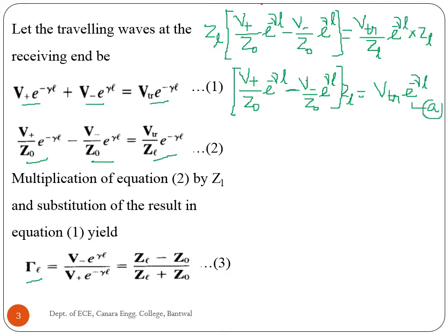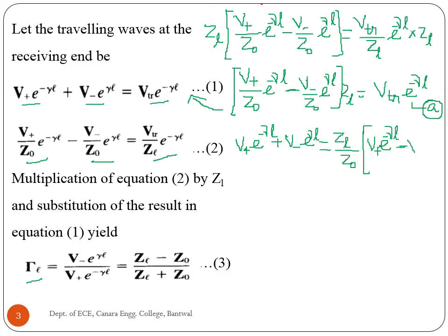This result is equation A. This equation should be substituted into equation 1. After substitution, equation 1 becomes: V+ e to the power minus gamma L plus V- e to the power gamma L, equal to Z_L over Z0 times Z0 into V+ e to the power minus gamma L minus V- e to the power gamma L.